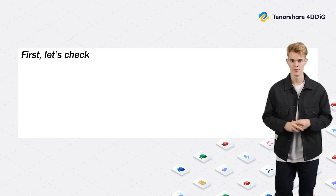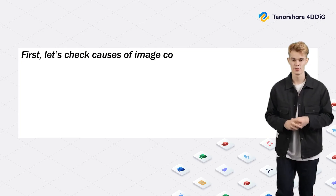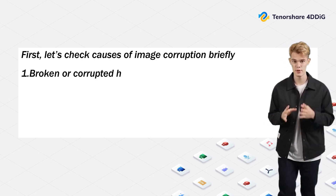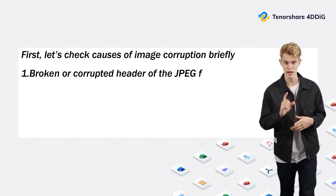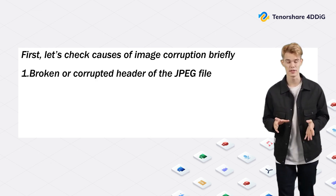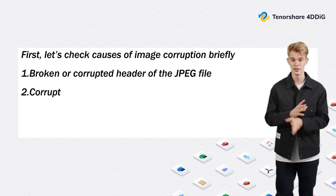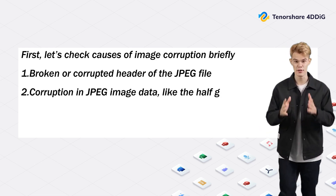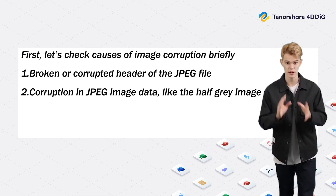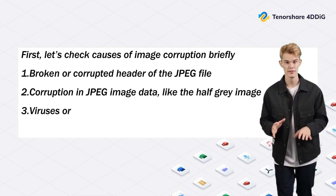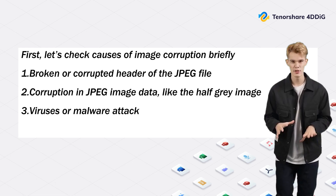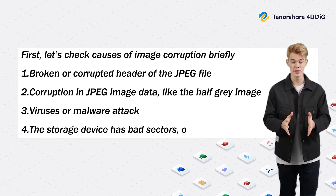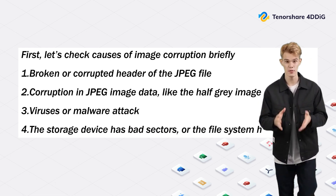First, let's briefly check the causes of image corruption: a broken or corrupted header of the JPEG file; corruption in JPEG image data, like the half-gray image; viruses or malware attacks; or the storage device has bad sectors, or the file system has corrupted.